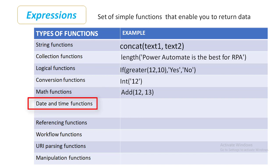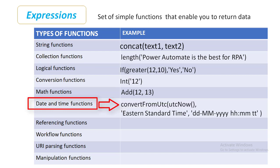Now we'll talk about date and time functions. These functions are used to return the current date and time, change time zones, retrieve specified information about date and time, or do other date-time manipulations. For example, I'm converting from UTC — using utcNow() — and then converting it into Eastern Standard Time in the format DD/MM/YYYY with hours, minutes, and seconds.